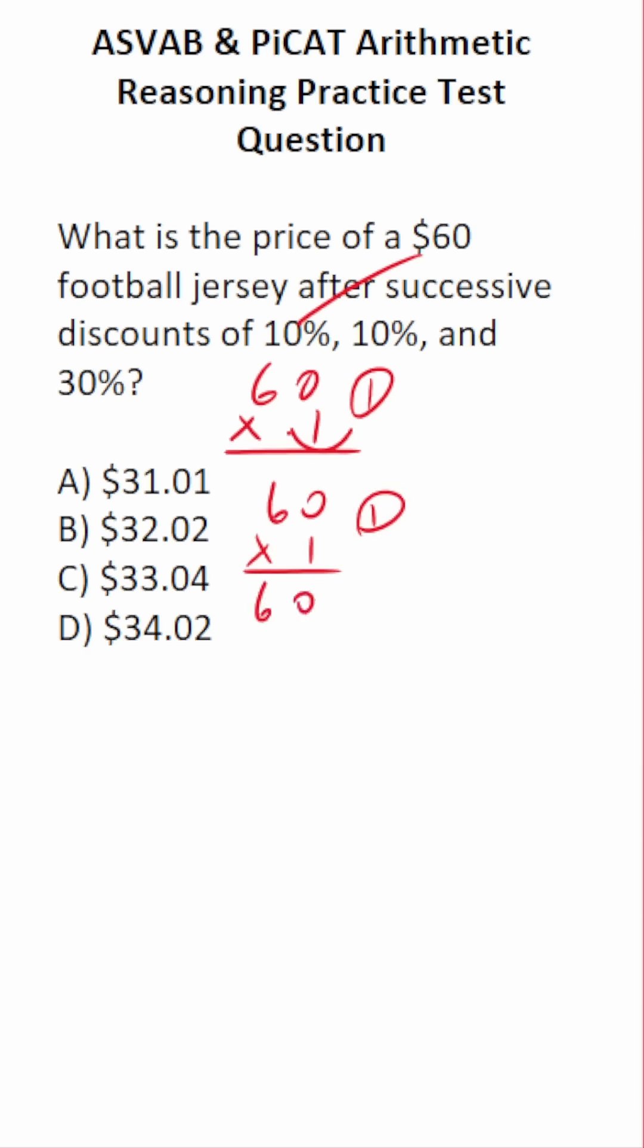60 times 1 is 60. Bring our one decimal back in. So that gives you a discount of $6. 60 minus $6 is going to be $54.